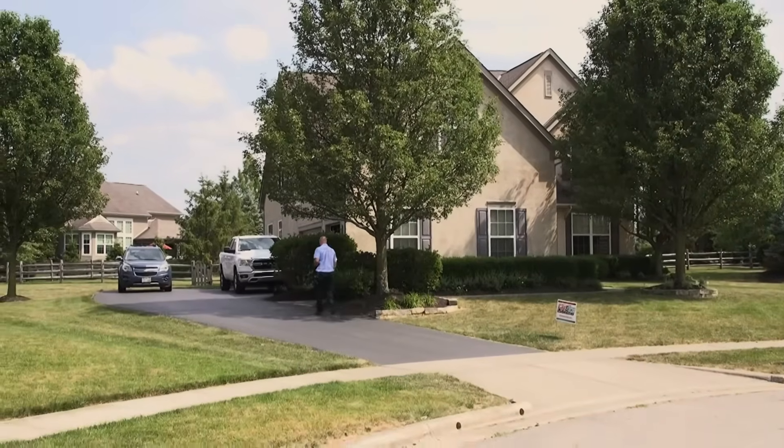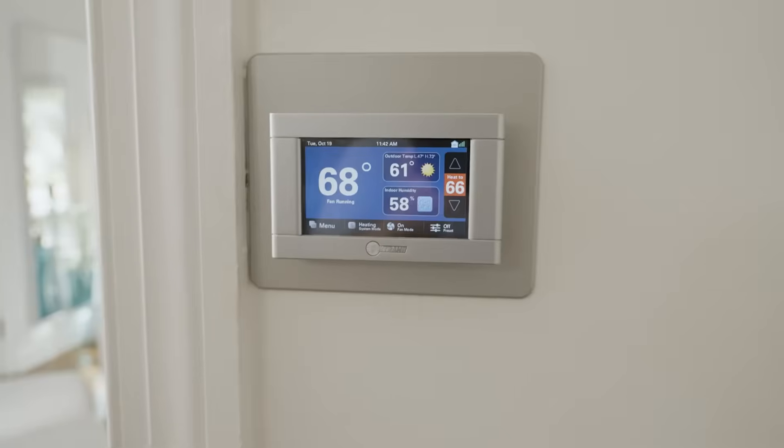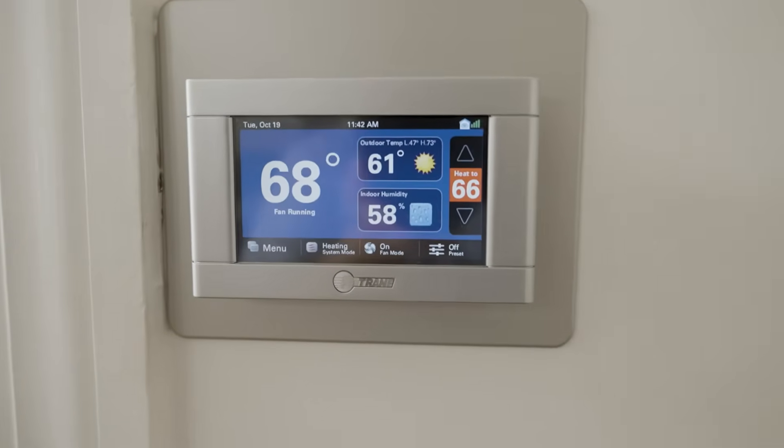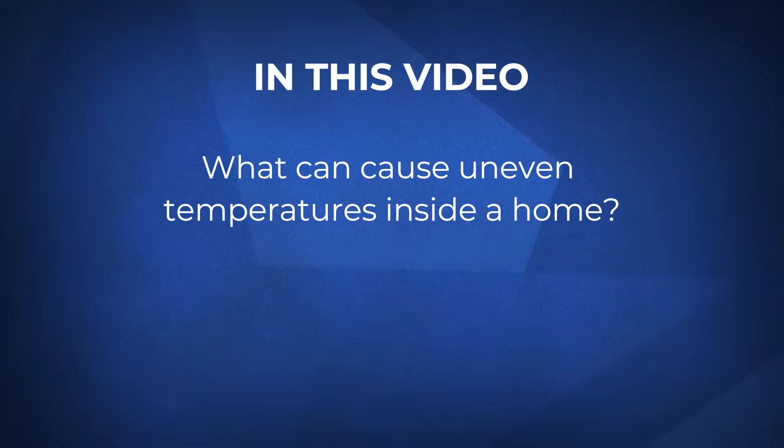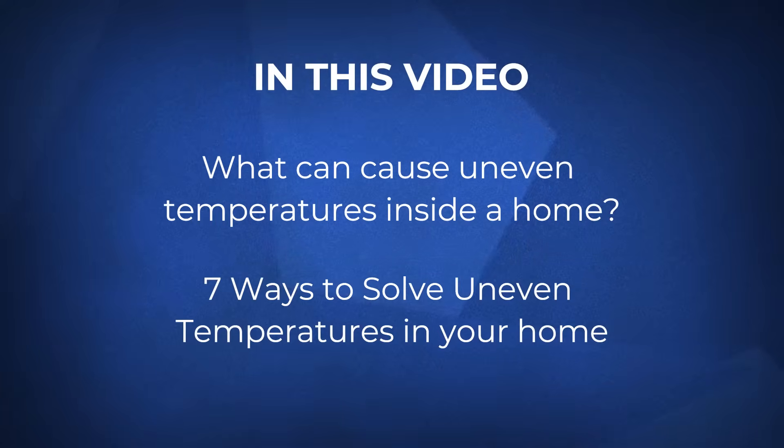Hi, I'm Luke from Fire and Ice. Uneven temperatures are one of the comfort concerns many customers have expressed. If you live in a two-story home, you've likely experienced it. The lower level will be comfortable in the summer but the upper level is hot and muggy. In the winter it's the opposite. This has to do with how thermodynamics works and how heat rises and cool air falls. In this video we'll go over the reasons that can cause uneven temperatures and seven ways to fix them. By the end of this video we hope you'll have a better idea of how to solve uneven temperatures and be on the path to better indoor comfort.